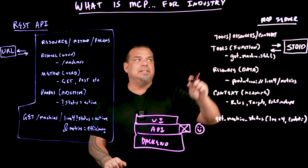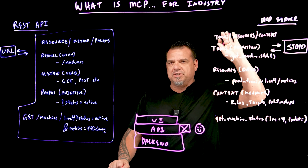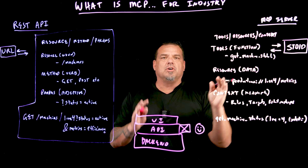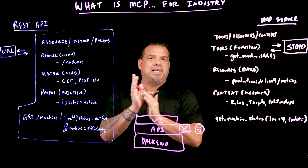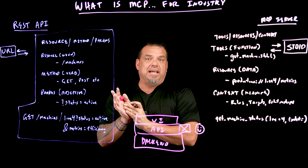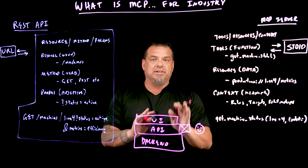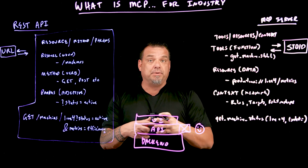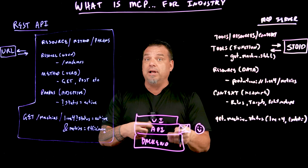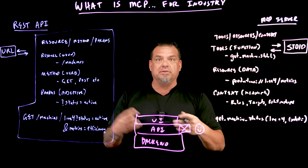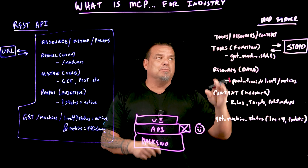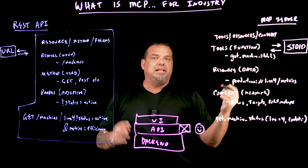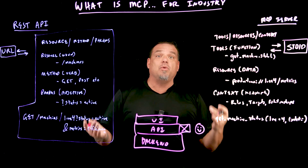Application number two — and this is the more predominant one — we're going to build MCP servers that enter agents and make it so the agents can interact with our data. Application number one is an MCP server that allows us to use an agent to help us build applications, add tags, build windows, et cetera. Application number two is using an MCP server that gives agents the ability to interact with our data and answer questions.